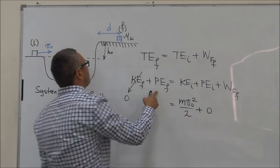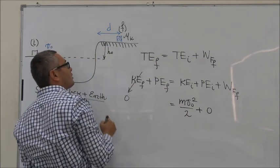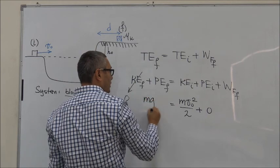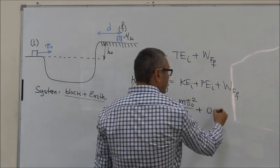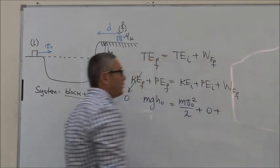The final potential energy, it's above the initial level by H0, is equal to mgH0. And finally, the work done by the force of friction.